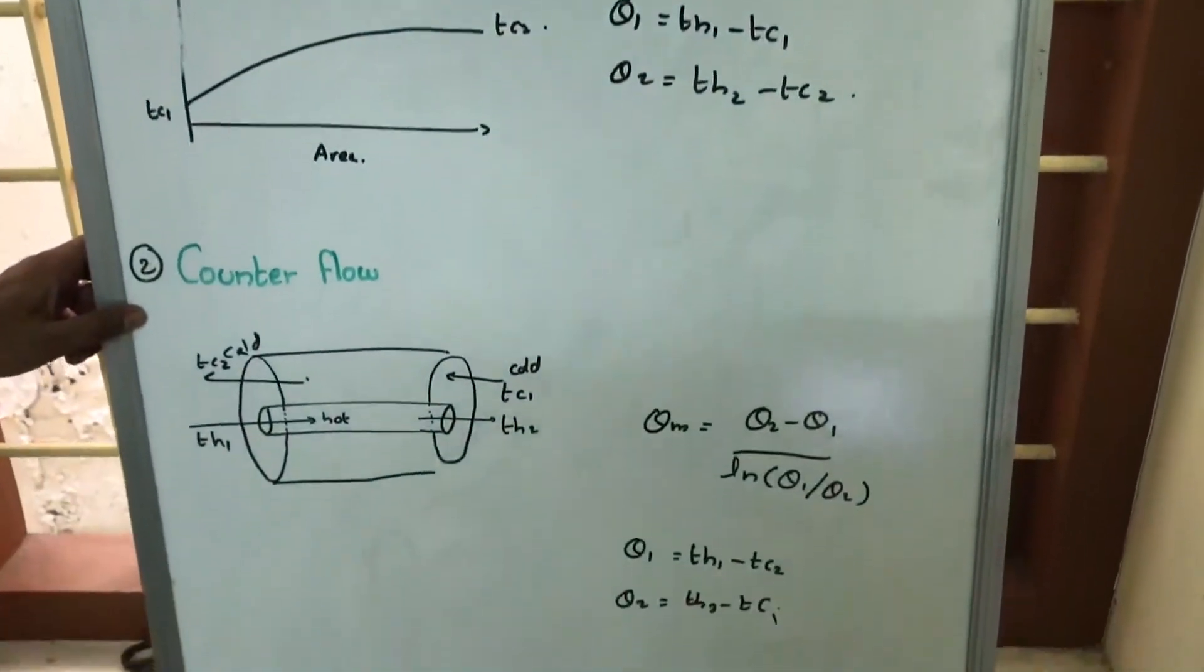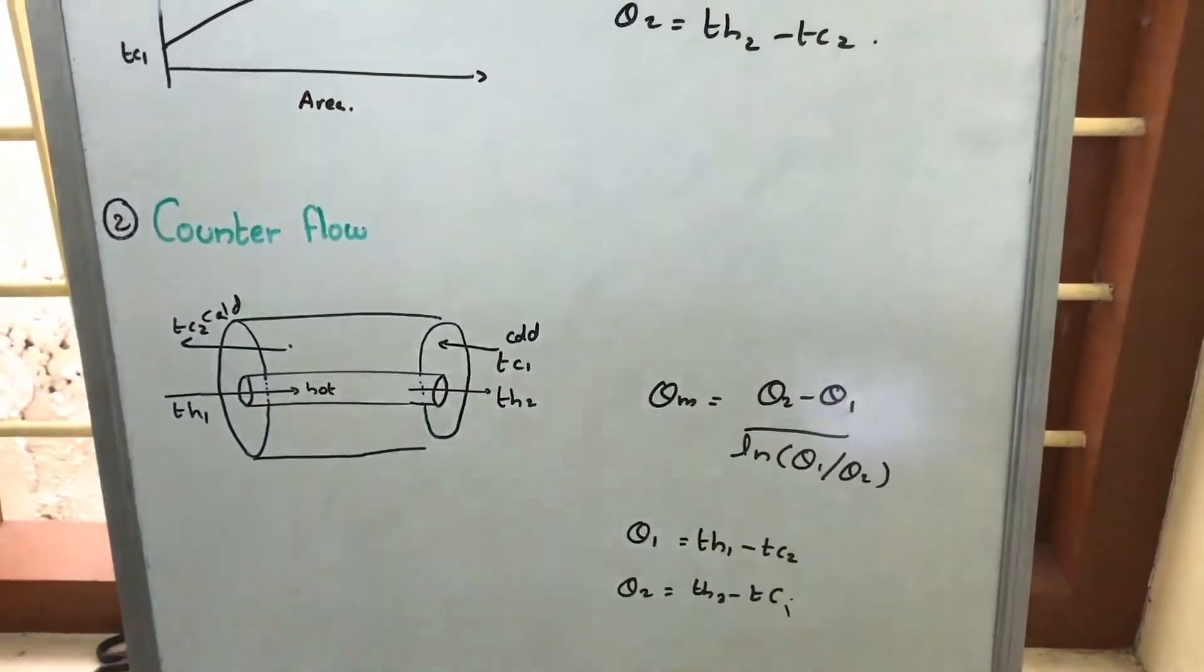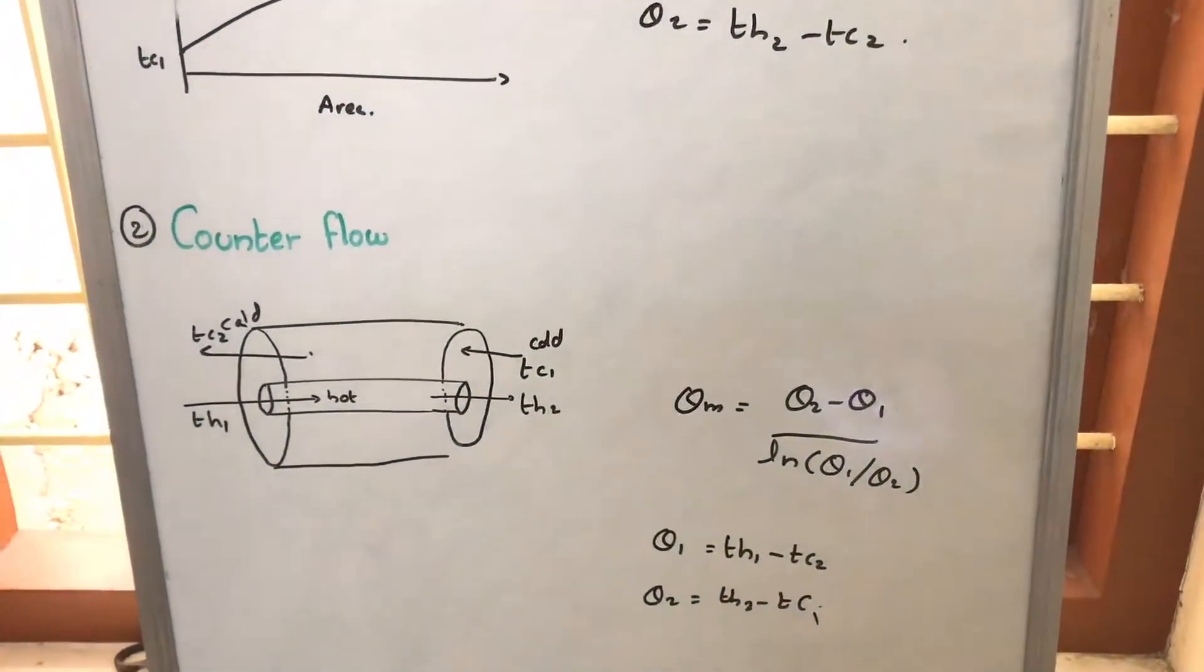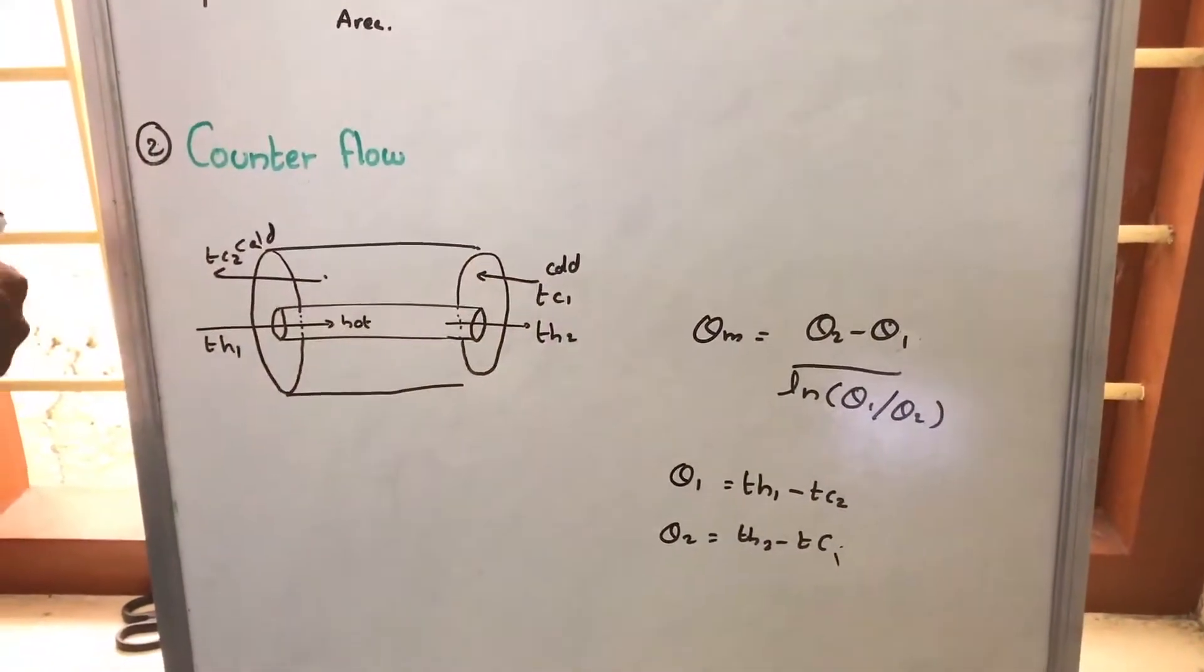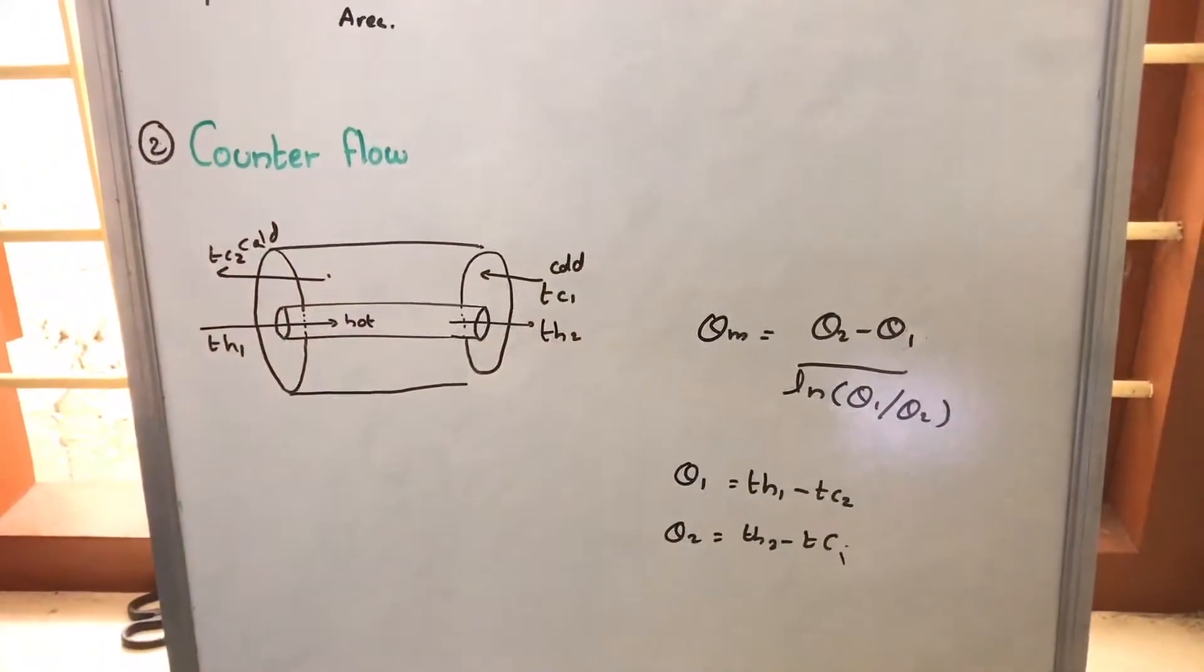In counter flow what happens is, the hot fluid and cold fluid are passing in different directions. That is, cold fluid is passing like this and hot fluid is passing like this.